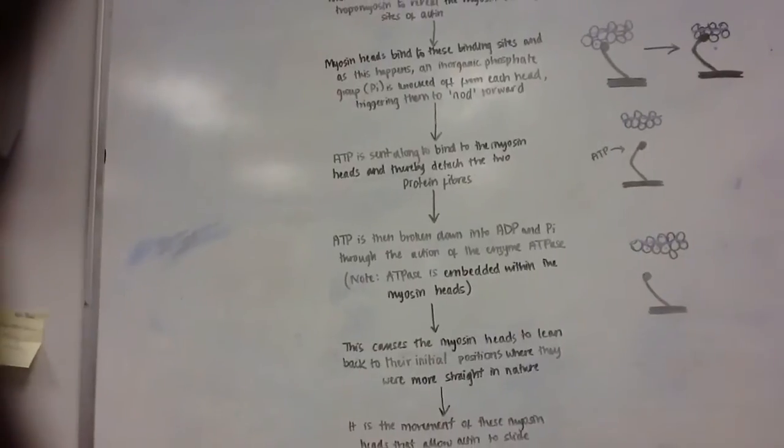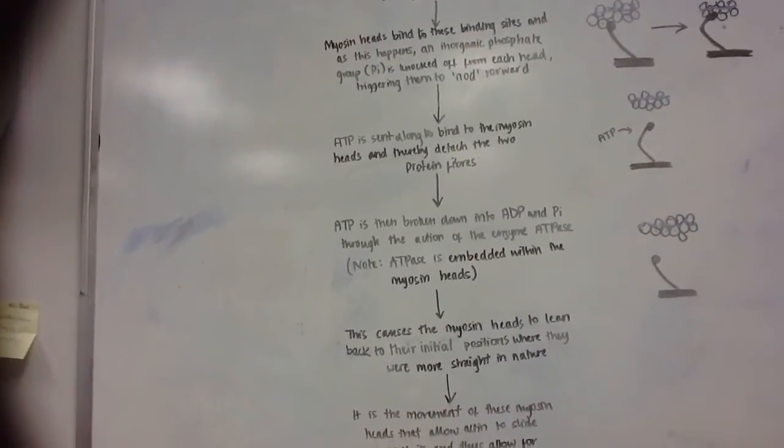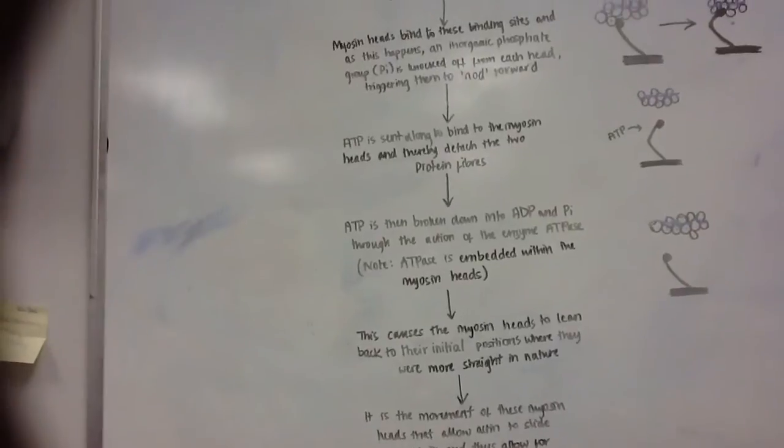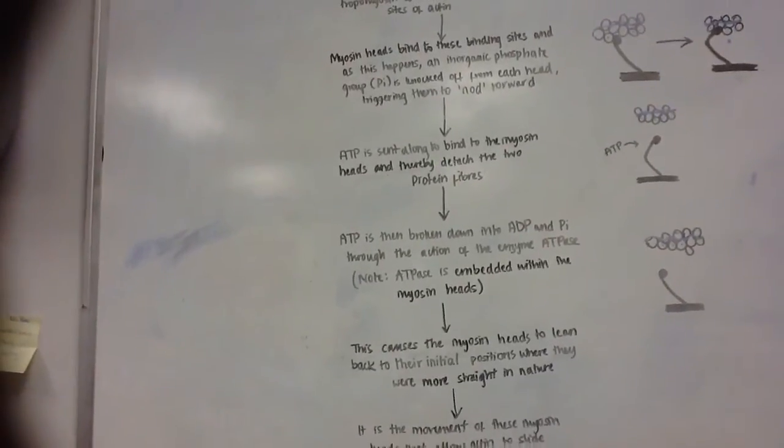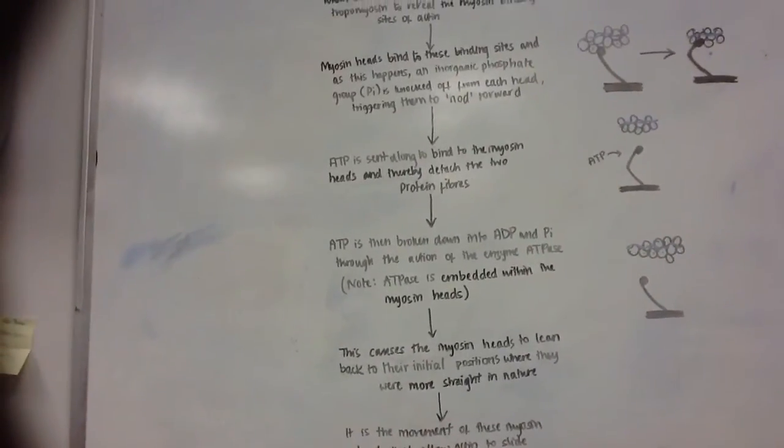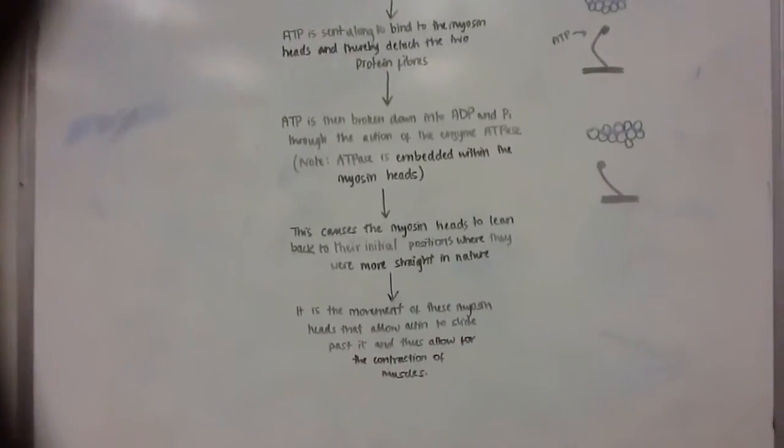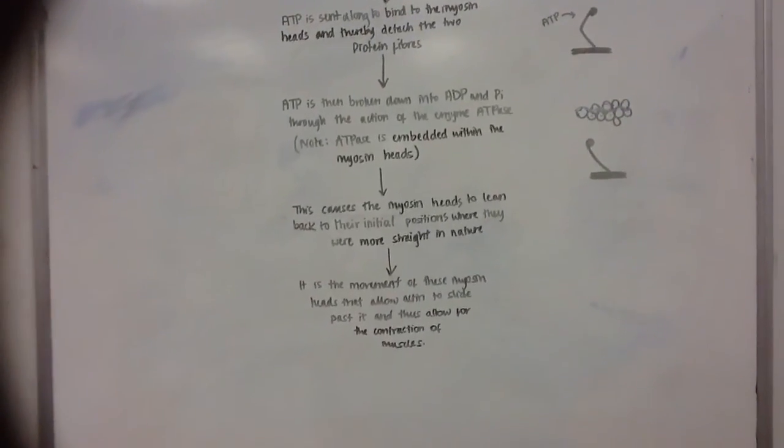ATP is then broken down into ADP and inorganic phosphate through the action of ATPase, which is an enzyme. It is worth noting that ATPase is embedded within these myosin heads.